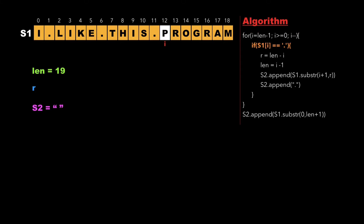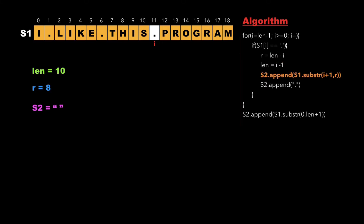At index 11 we encounter a dot, so s1[11] equals dot. We calculate r as length minus i, which is 8, and update the value of length as i minus 1, which is 10.